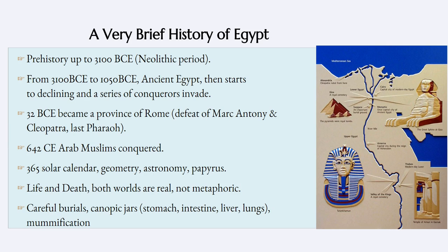What do we get from Egypt? Some common technology. We get the 365 solar calendar, which is how we place our calendar to the movement of the sun and not the movement of the moon. That divides kind of neatly, and then as we know, because every four years it becomes a leap year, it doesn't divide totally, so we have to add a day every four years.